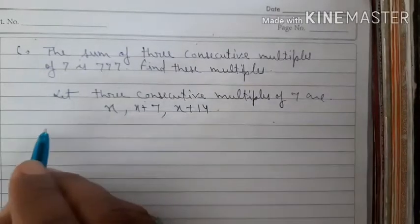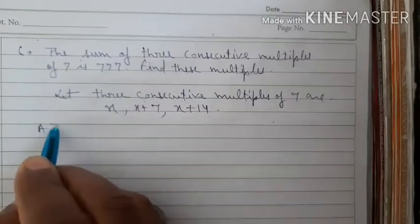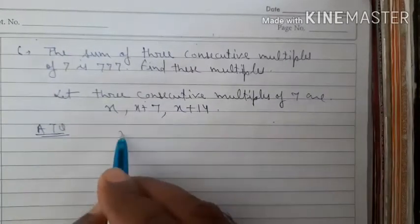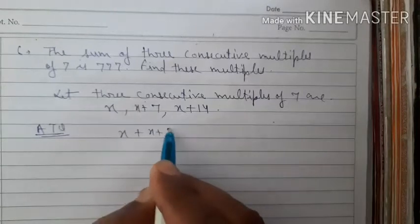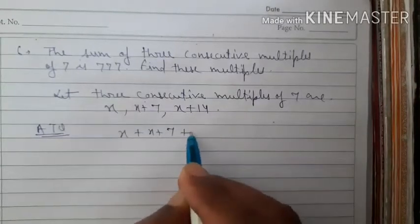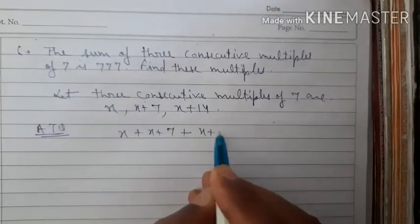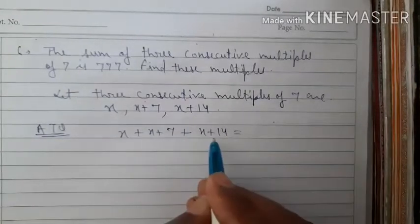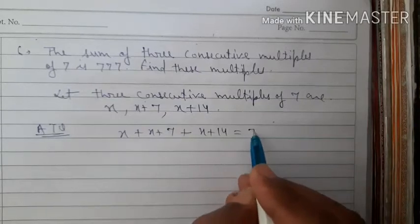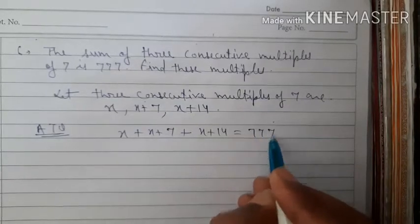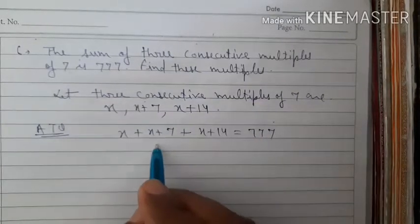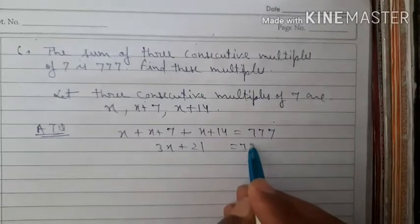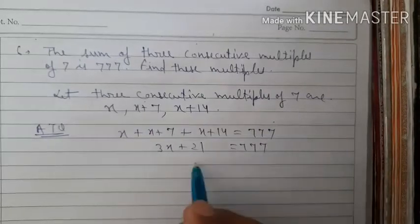According to the question, the sum of all three is 777. So x plus (x plus 7) plus (x plus 14) equals 777, which gives 3x plus 21 equals 777.